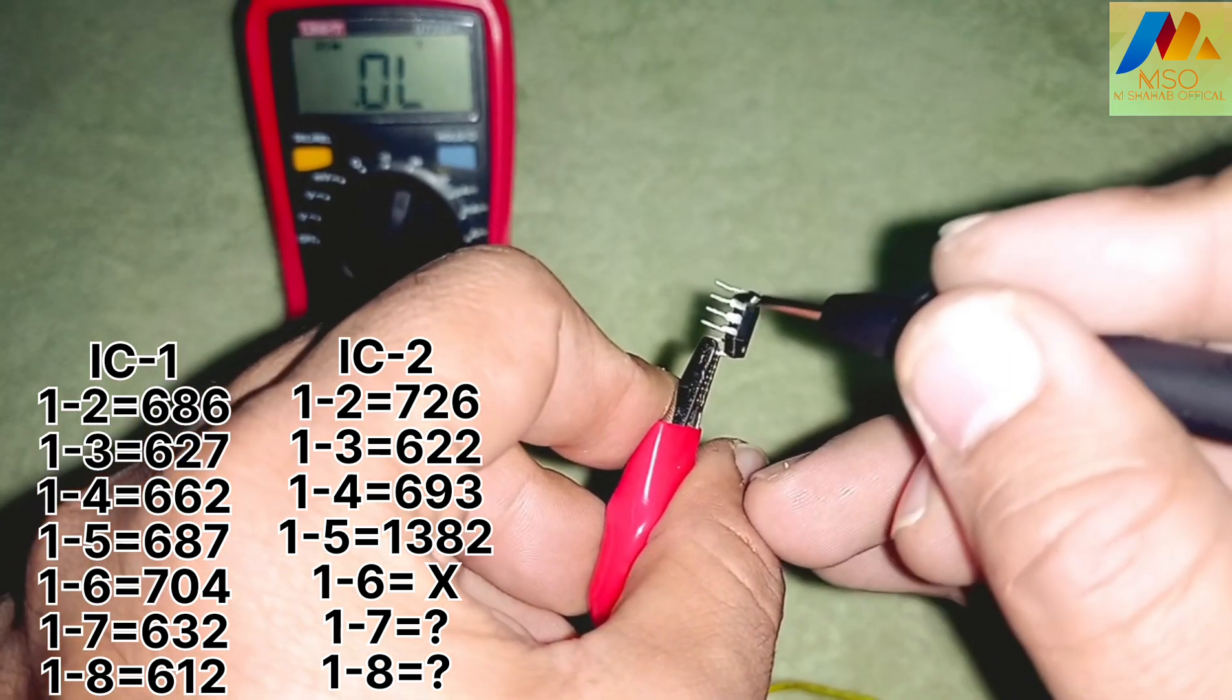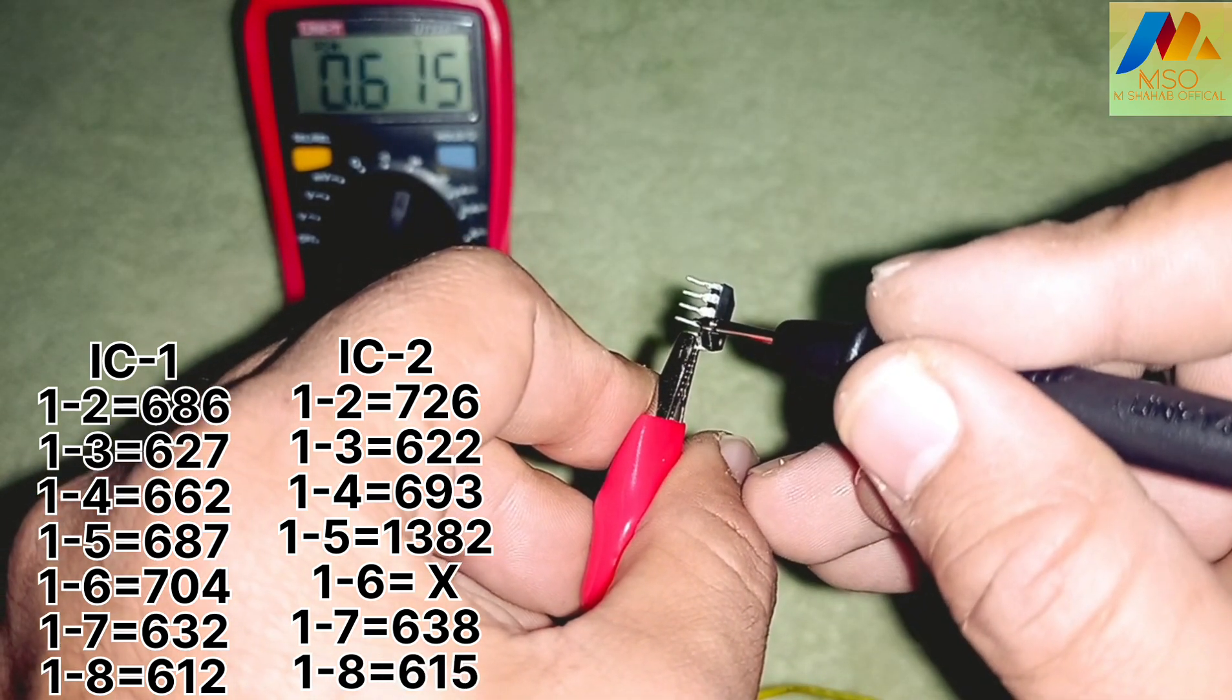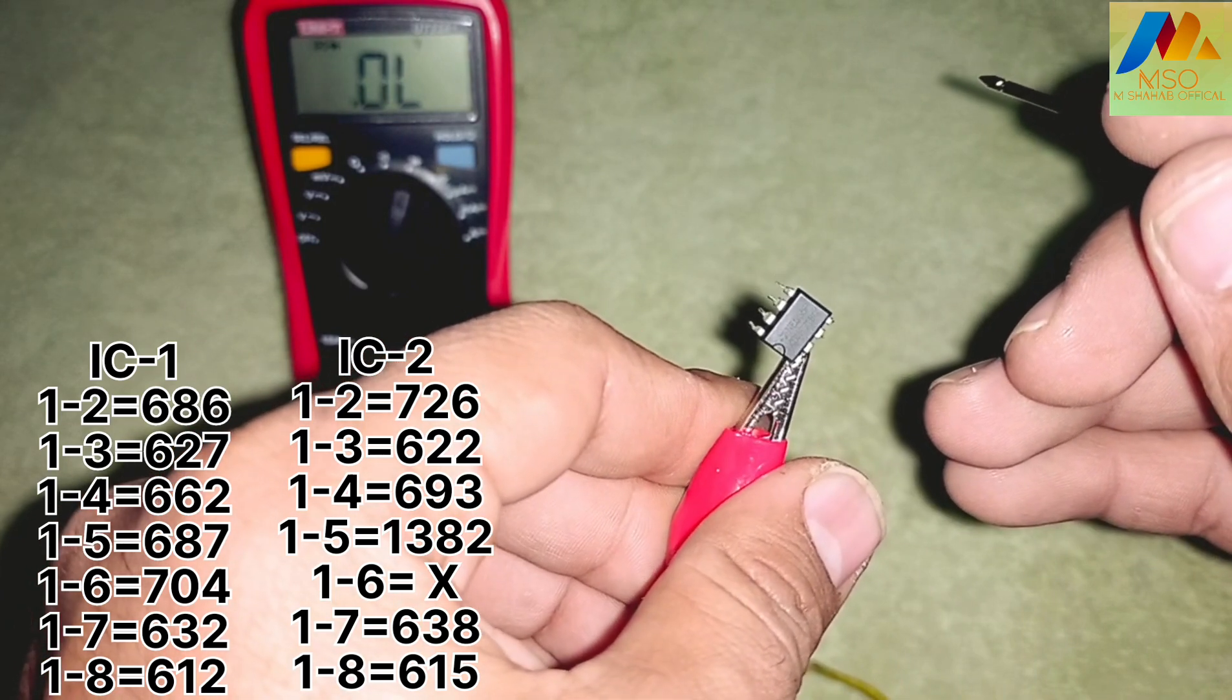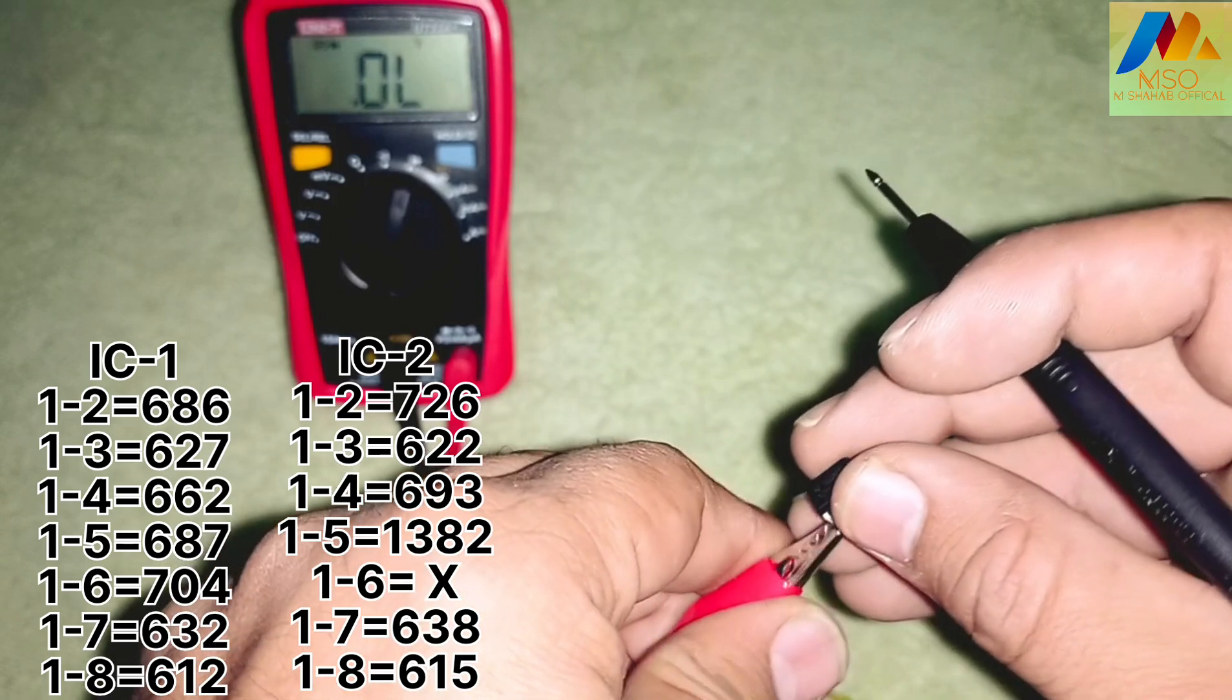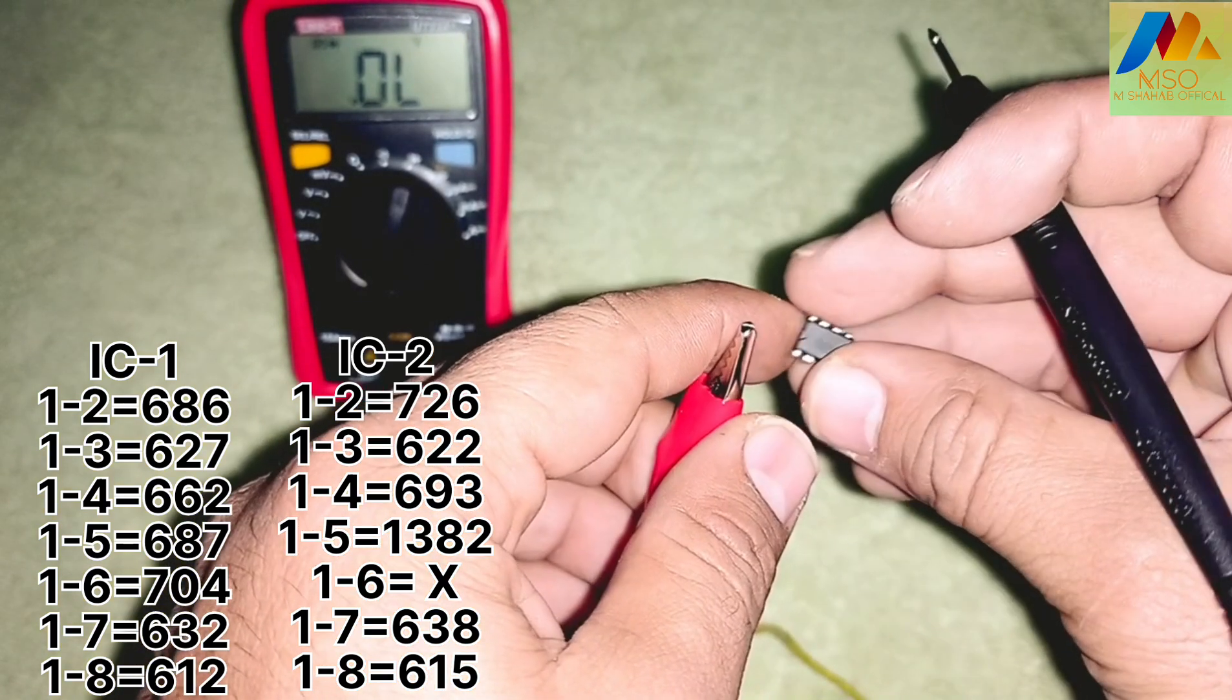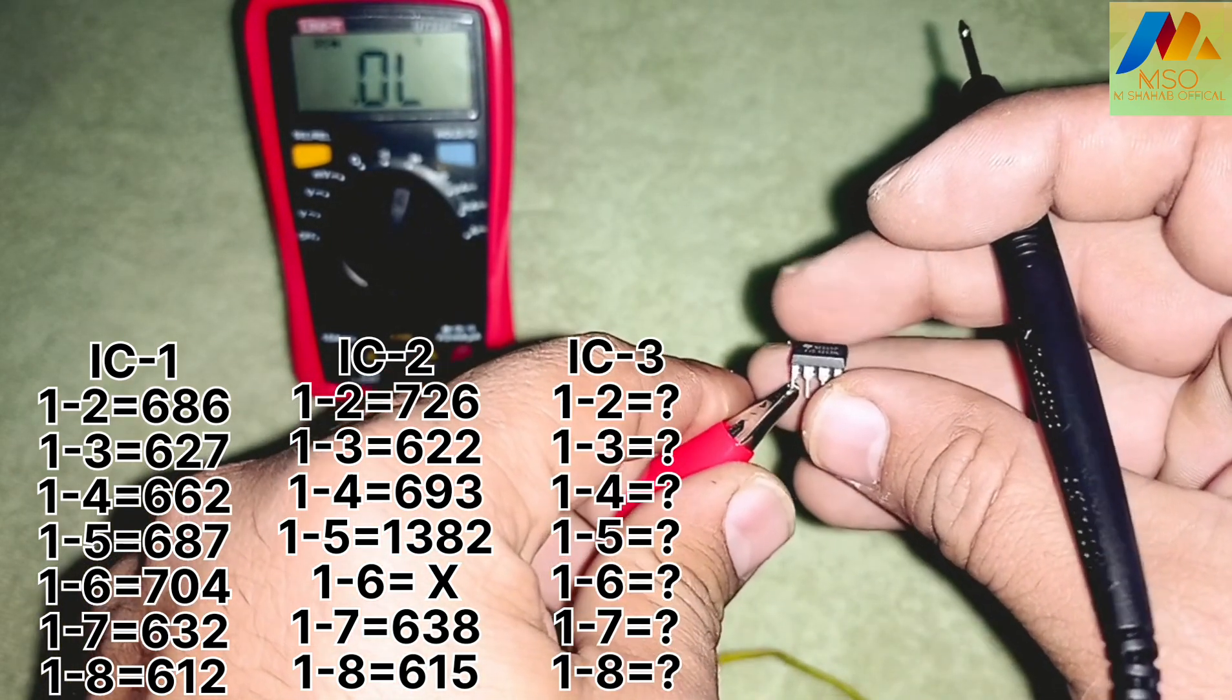From the three different ICs here, we will take 3rd IC and connect the positive probe of the multimeter to its pin number 1.